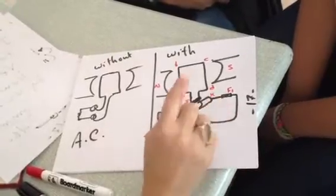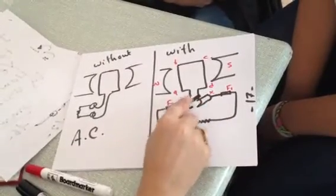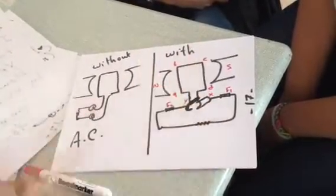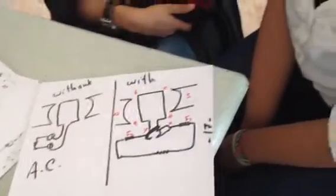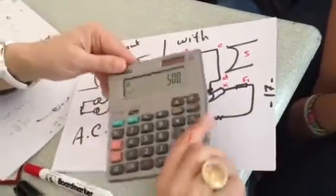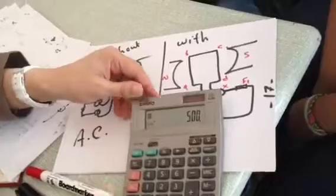The brushes are constant. The commutator, which are the two half rings, will move with the coil. Okay. Okay. Let's do it.